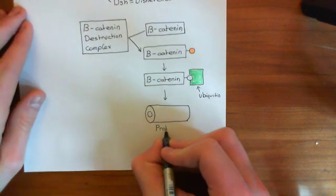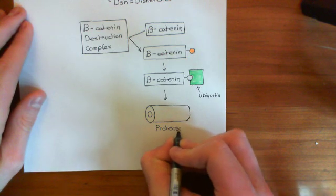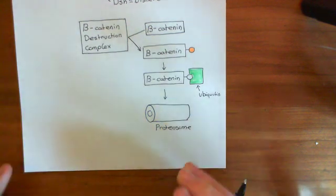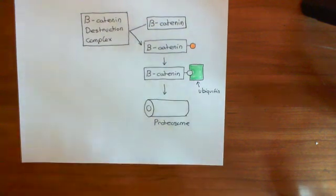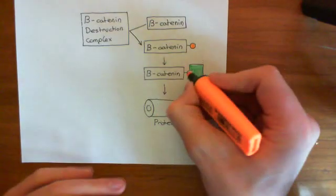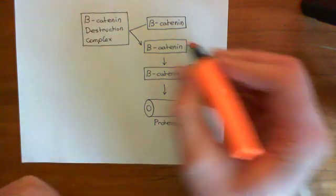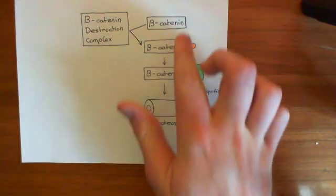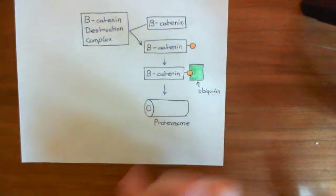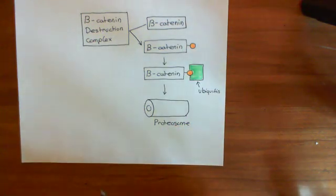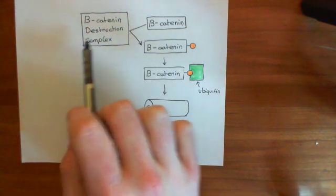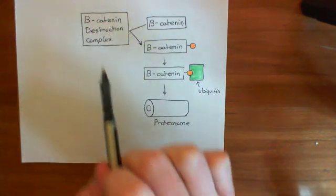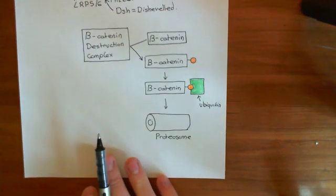Once beta-catenin has had ubiquitin stuck onto it, it gets destroyed by this proteasome. The beta-catenin destruction complex is responsible for sending beta-catenin to the proteasome for destruction. This beta-catenin destruction complex is what keeps beta-catenin levels in the cytoplasm low. In the next video, we'll see what makes up this beta-catenin destruction complex and how the Wnt signaling pathway interacts with it.